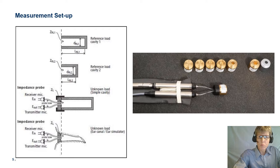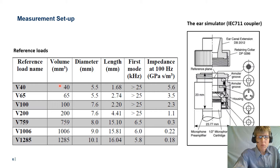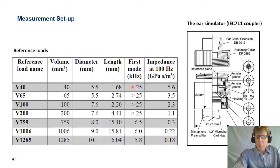Here's an overview of all the reference load cavities used. They range in volume from 40 cubic millimeters to 1285 cubic millimeters. We have the diameter and length listed, as well as the first mode — the frequency where the cavity starts to break up — which occurs above 25 kHz for the small ones and already around 6 kHz for the large ones. At that frequency, the cavity no longer behaves like a compliance. The small cavities have a much higher impedance at 100 Hz than the large ones.